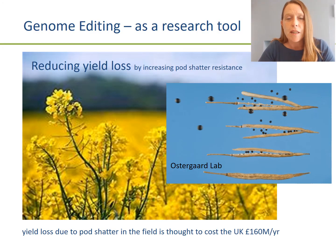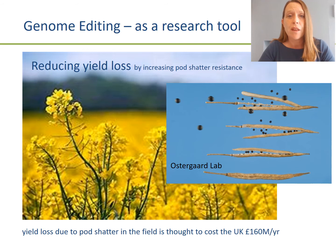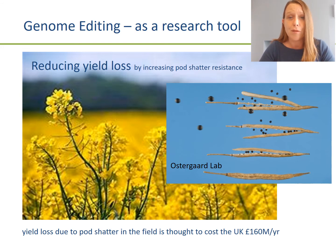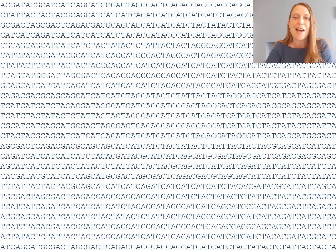I use genome editing as a research tool to gain a better understanding of which genes control which traits. For example, at the John Innes Centre we have researchers interested in understanding the genes involved in pod formation. The reason we're interested in that is because pod shatter in the field is thought to result in yield losses which can cost the UK economy up to £160 million a year. Ideally we want those seeds to stay in the pods until the farmer harvests them, so if we can home in on the genes believed to play an important role and disrupt those genes, we can see whether they are involved in pod shatter.